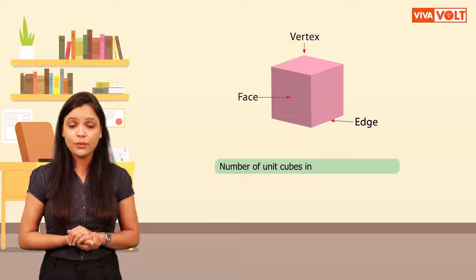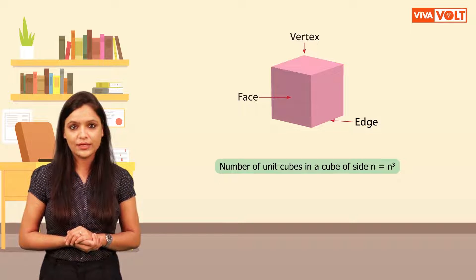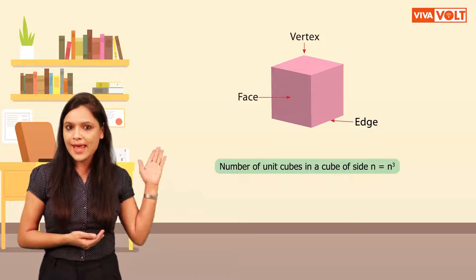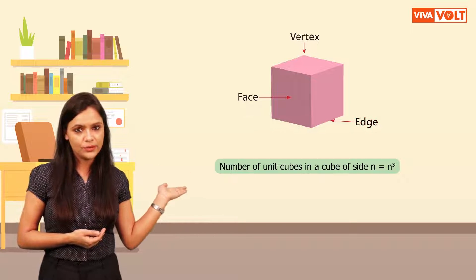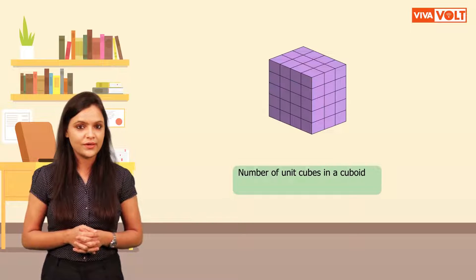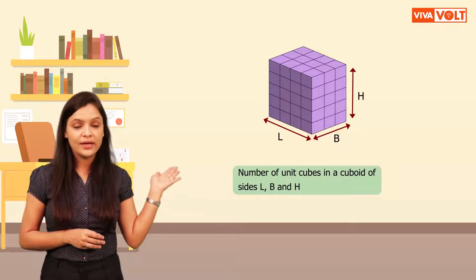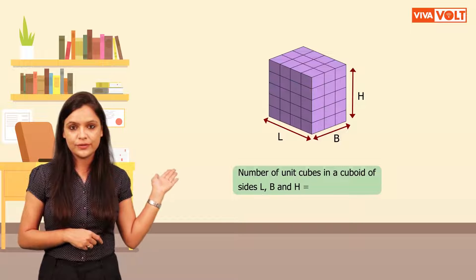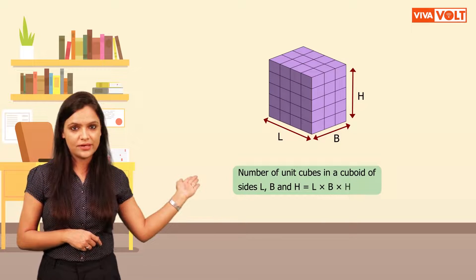Number of unit cubes in a cube of side n is equal to n cube. Here, n is the side edge of the cube. Let's learn the formula for finding the number of cubes in a cuboid of sides L, B and H. Number of unit cubes is equal to L into B into H.